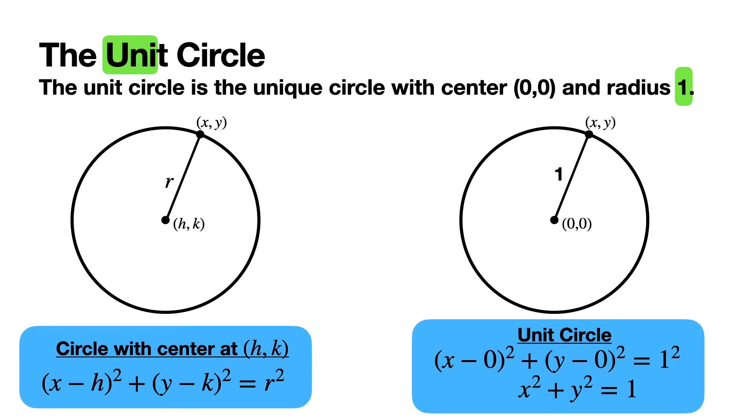But instead of a radius of r, you have a radius of 1. Instead of the center being (h,k), you have the center being (0,0). We can plug those values into the formula and simplify to get x² + y² = 1 as the formula for the unit circle. The question is, how do we get an ellipse from this?